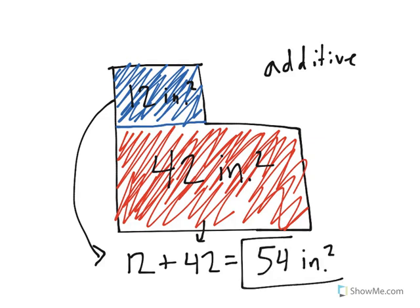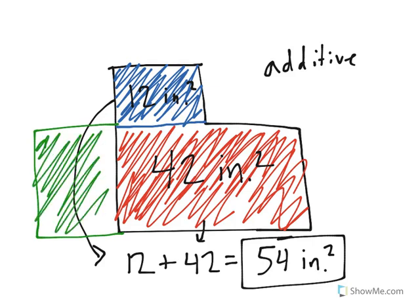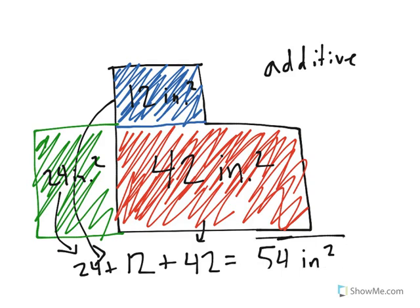Notice how all we had to do is add up all the different sections. Even if we were to add another green section over here that had a total area of 24 inches squared, in order to find the area of the shape now, all we'd have to do is add that 24 in with the other two, and we could see that 24 plus 12 is 36. 36 plus 42 is a total of 78.